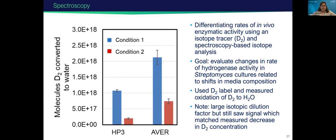I'm going to talk now about some of the capabilities we have at EMSL and highlight a few projects. In this work, scientists were interested in differentiating rates of activity using an isotope tracer and spectroscopic isotope analyses. They were looking at different media with different types of trace metals. Heavy hydrogen was added to media, and then this was measured for oxidation of hydrogen to water. In the plot, you have molecules of hydrogen converted to water on the y-axis, looking at two different strains under two different conditions in two different media. In both cases, we see that in condition one, there's a lot more activity happening than in condition two.